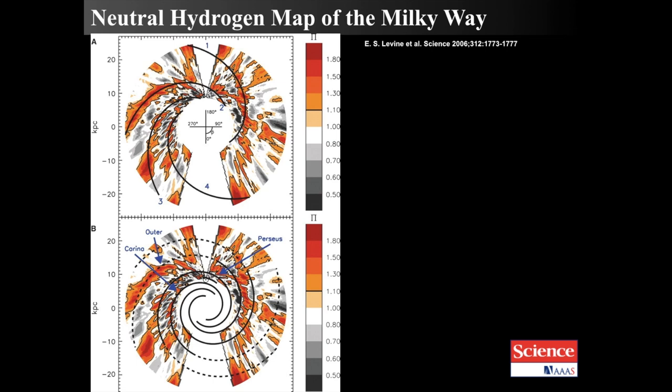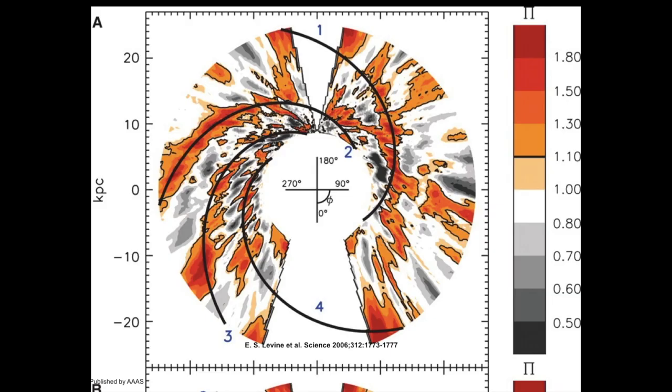A more recent edition of the neutral hydrogen map comes from Levine et al. They published this in Science Magazine in 2006. They had a much, much more robust study of neutral hydrogen and were able to trace out spiral arms. Their tracing showed that they saw what looks like about three or four spiral arms, depending on how you map it.